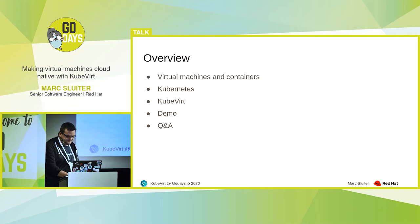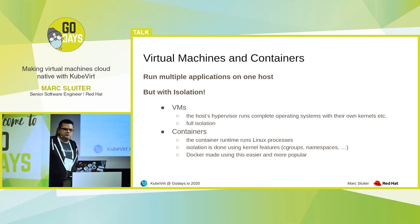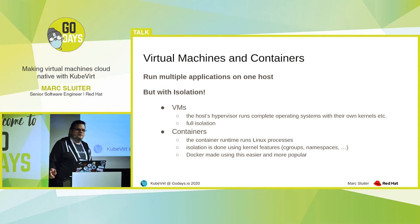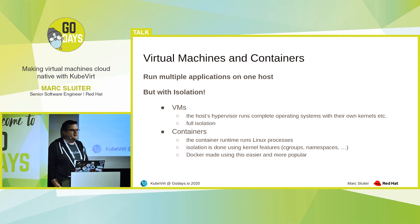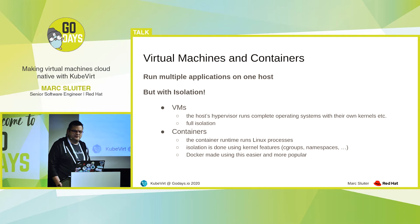Let's start with virtual machines and containers. Why do you need them? You want to run multiple applications on the same host, but isolated. The first way, the older way, is doing this with virtual machines, where you run a hypervisor on your host, and the hypervisor is spinning up complete operating systems where your application is running. The newer way is doing this with containers. They run just a single Linux process in the container, and the isolation is implemented by using kernel features like cgroups and namespaces.